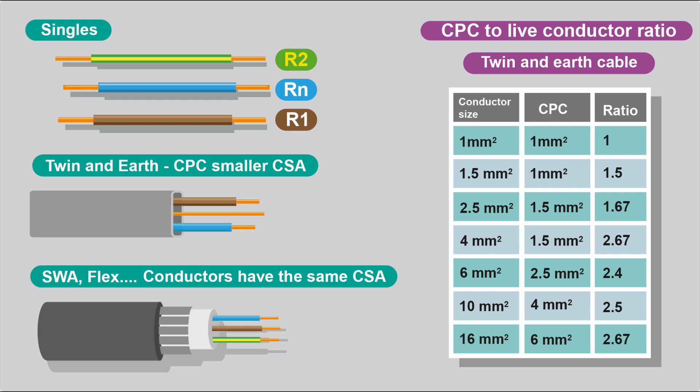When we're working out the resistance of conductors in twin-and-earth cable, you have to be careful. The line and neutral will have the same size cross-sectional area, but the CPC will be slightly smaller. And there is a ratio.